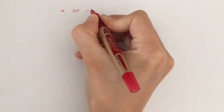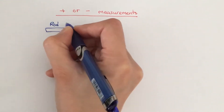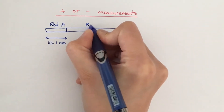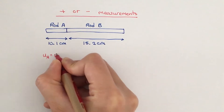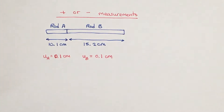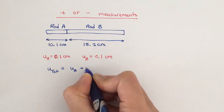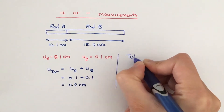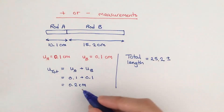Next, let's look at what happens if we want to add or subtract measurements with their uncertainties. We have rod A, which is 10.1 centimeters long, and rod B, which is 15.2 centimeters long. They individually have uncertainties: rod A's absolute uncertainty is 0.1 centimeter, and rod B's absolute uncertainty is also 0.1 centimeter. The rule is when we add or subtract measurements, we add their absolute uncertainties. So their total absolute uncertainty is 0.2 centimeter. The total length is 25.3 centimeters with a total absolute uncertainty of 0.2 centimeter.